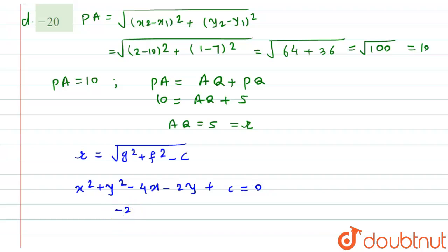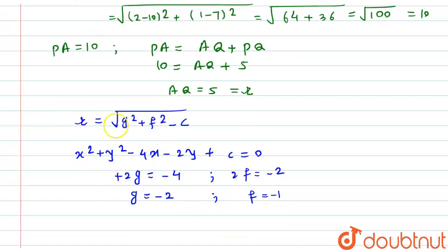On comparing, 2G will be equal to minus 4, and 2F equals minus 2. We can see here the value of G will be minus 2 and value of F will be minus 1. On substituting this in the formula of radius,